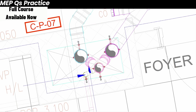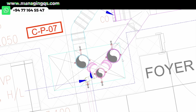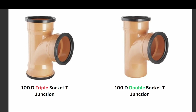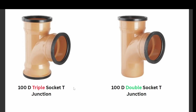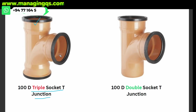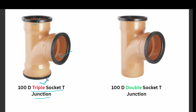Before discussing accessories, let me show some important fitting identification ideas. First, you can see a 100mm diameter triple socket T-junction. Triple socket means there are three ways available to fix the pipe — one, two, three — that is why we call it a triple socket T-junction.